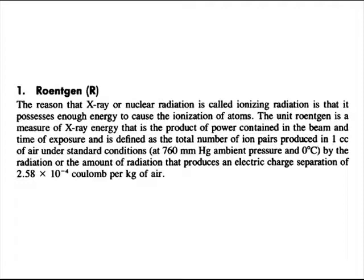An important radiation unit is the Röntgen. One Röntgen measures X-ray energy as the product of beam power and exposure time, defined as the total number of ion pairs produced in one cubic centimeter of air under standard conditions — 760 mmHg pressure and 0 degrees Celsius. This corresponds to an electric charge separation of 2.58 times 10 to the minus 4 Coulombs per kilogram of air.